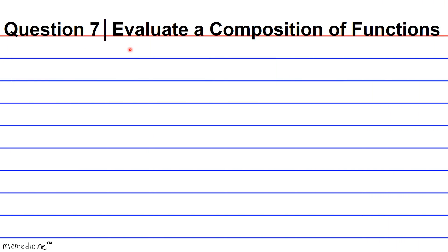Question 6. Evaluate a composition of functions. If f(x) is equivalent to x² − 3x and g(x) is equivalent to 2x − 4, evaluate f ∘ g(5). Definitely press pause if you need to, and I'll give you a moment to think.